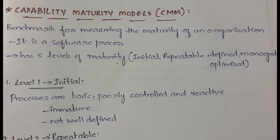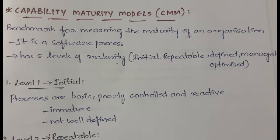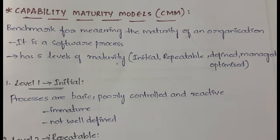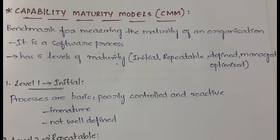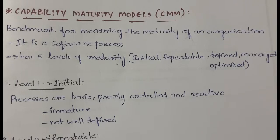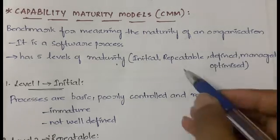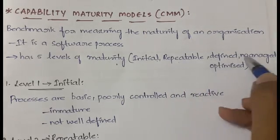CMM is a software process and one of the contemporary management approaches. In CMM we actually have five levels of maturity — level 1 to level 5. The five levels are: Initial, Repeatable, Defined, Managed, and Optimized.